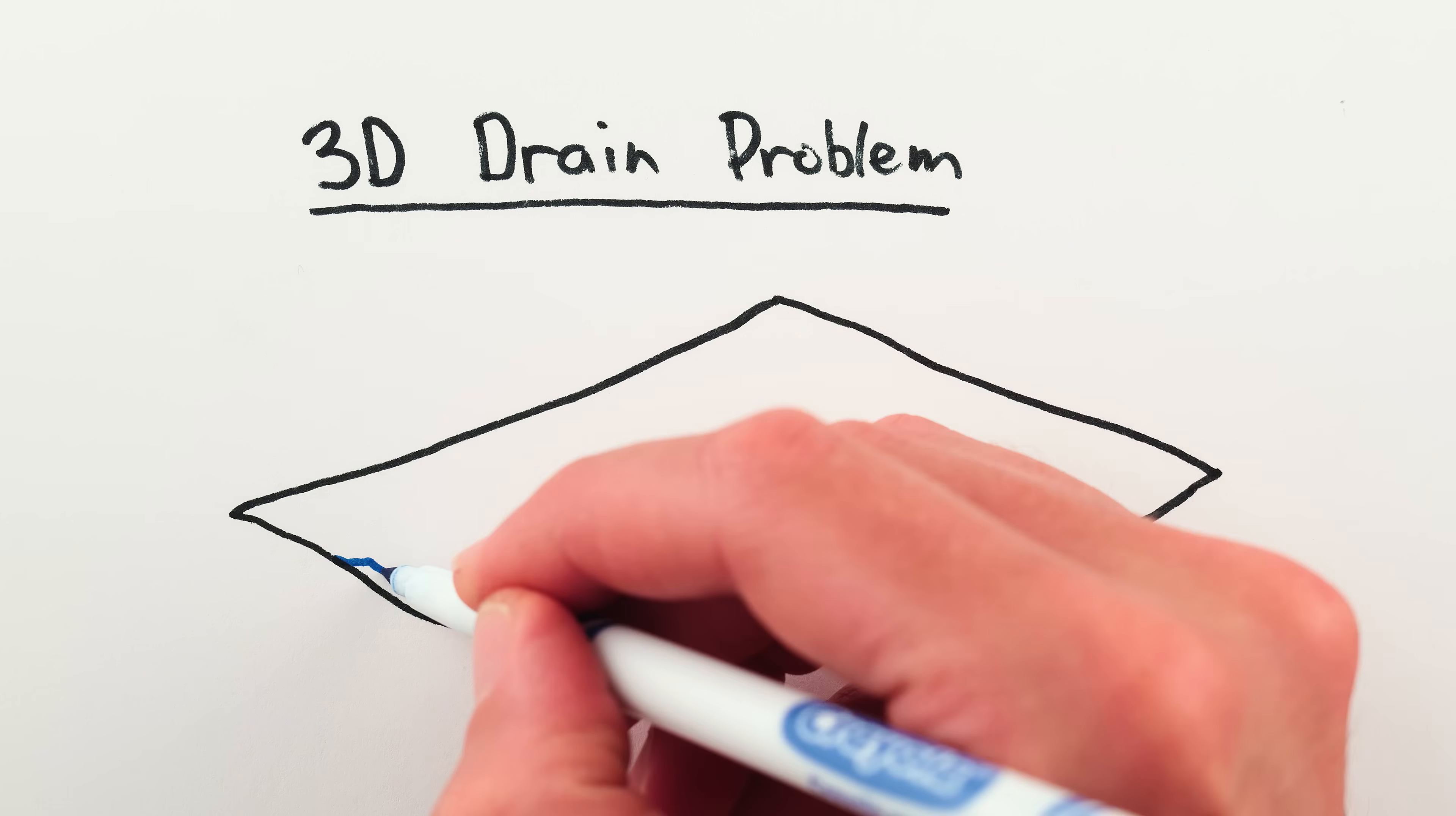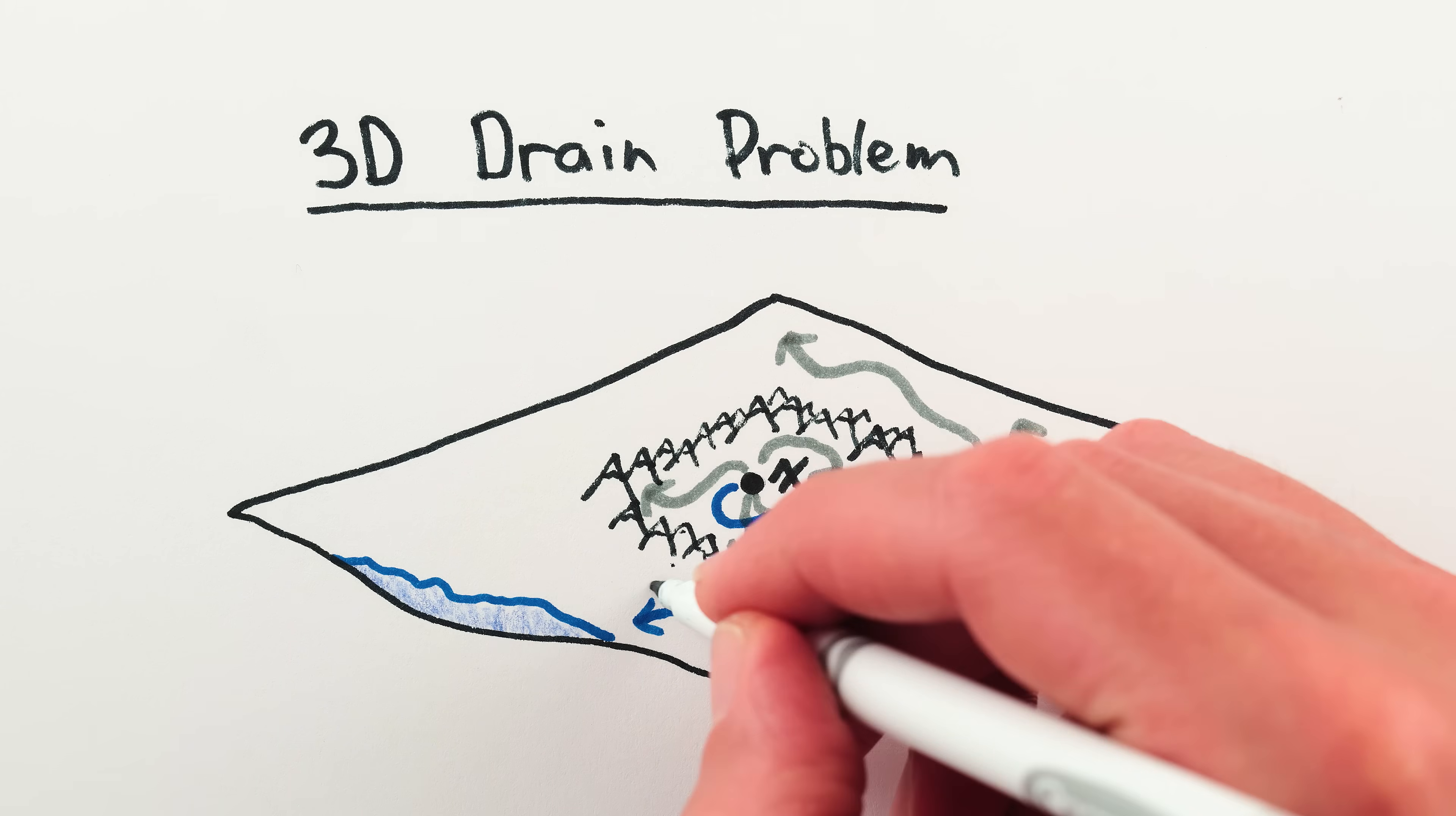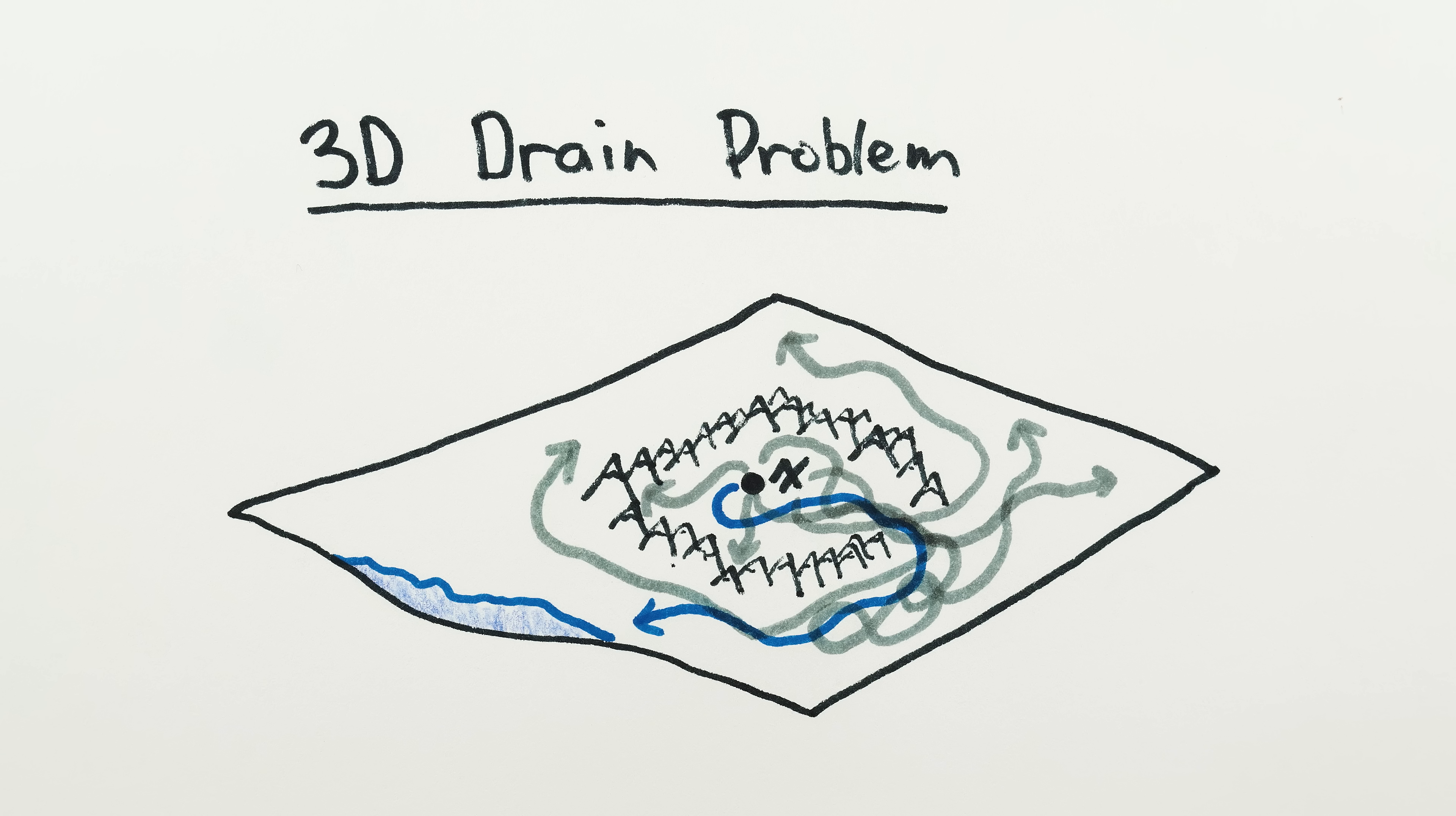In 3D, draining oceans is more complicated, because even if there are mountains all around you, all it takes is one path that has no high point between your location and the drain to drain your location. And there are essentially infinite possible paths you'd have to check to know for sure you're in a landlocked sea.